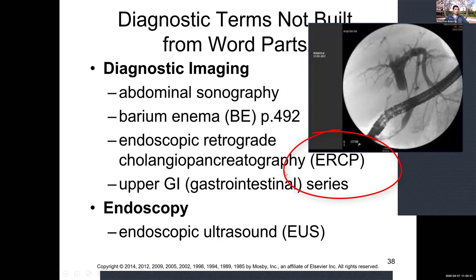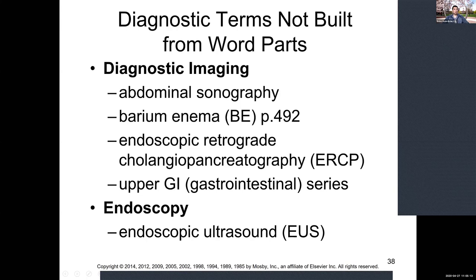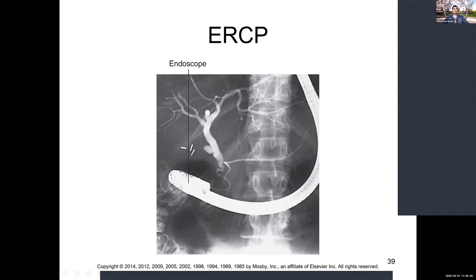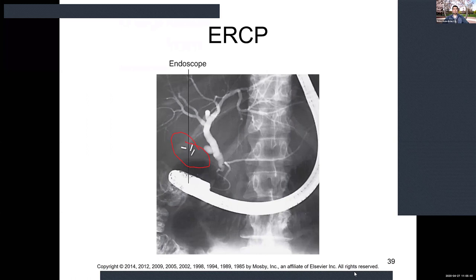In the ERCP image you can see small white dashes above the scope — those are staples from a previous procedure, possibly a cholecystectomy. The patient likely had some other issue, perhaps with the pancreas, and when going in you can see the staples left from the prior surgery.